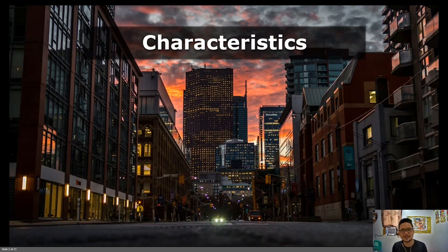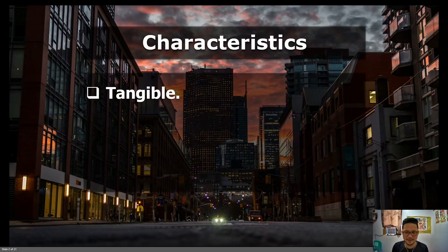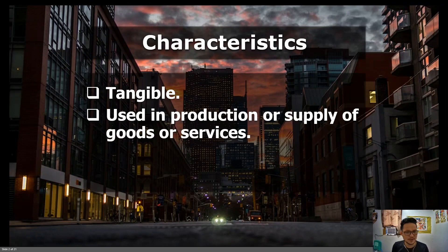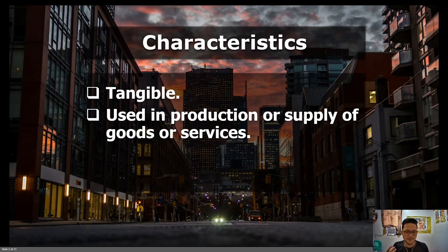First, let's talk about the characteristics of an item of property, plant, and equipment. PPE is tangible, meaning it has physical substance. PPE are used in production or supply of goods or services. A delivery truck is used in delivering items to customers — used in business. An office building is occupied so that clerical and other office activities may be carried out. A particular item cannot be classified as PPE if it is not used in business.